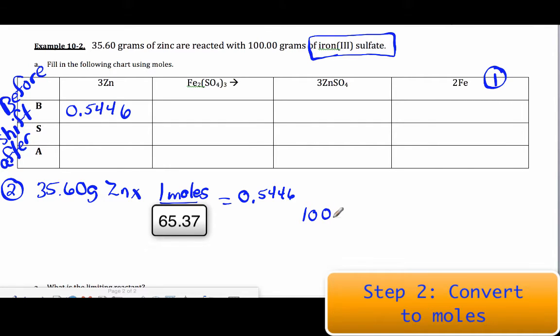Now, I'm going to do the same thing with my iron(III) sulfate. I have 100 grams, and I have one mole for every 399.88 grams, and I get, for that answer, 0.2501 moles. Now, at the very beginning, I don't have any of my product, so those are zeros. So that's our first two steps. You know how to do that already.